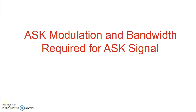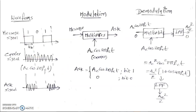Hi, I am Ravi Kumar. In this video we will see ASK modulation - Amplitude Shift Keying modulation - which is one type of digital modulation technique. We will also see what bandwidth is required for the amplitude shift keyed signal to transmit it over the channel. In digital modulation, we use a digital message signal and an analog carrier signal. The carrier is ac·cos(2πfc·t), where ac is the amplitude and fc is the carrier frequency.